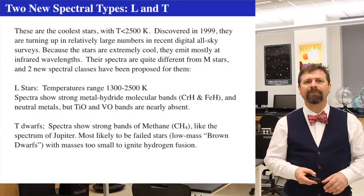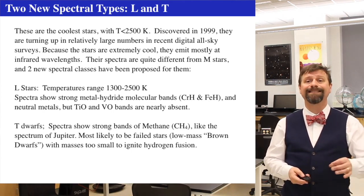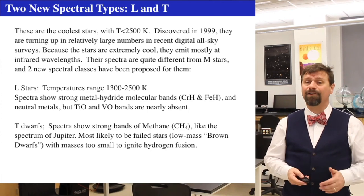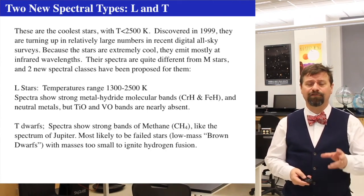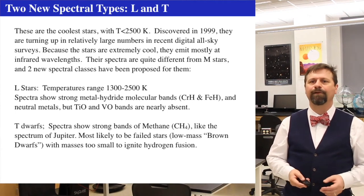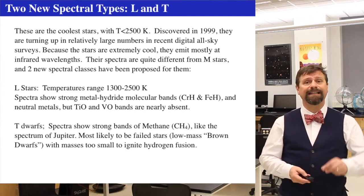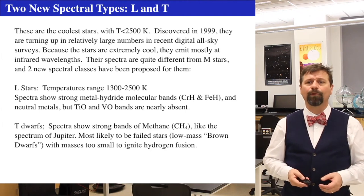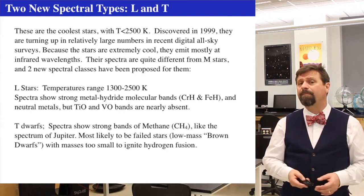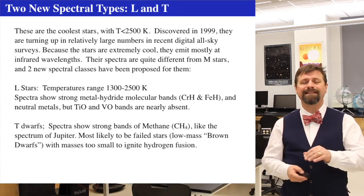In the late 1990s, a couple of new stellar classifications were added: the L's and T's, which are much cooler than M stars — under about 2,500 Kelvin. They show up in extraordinarily sensitive infrared full-sky surveys because they emit mostly at infrared wavelengths. L-type stars are between about 1,300 and 2,500 Kelvin, with lots of molecular absorption such as chromium hydride, iron hydride, neutral metals, and strongly bound molecules like titanium oxide and vanadium oxide.